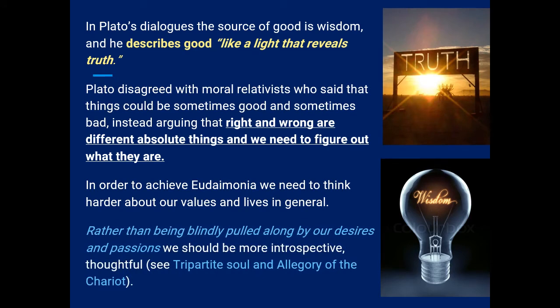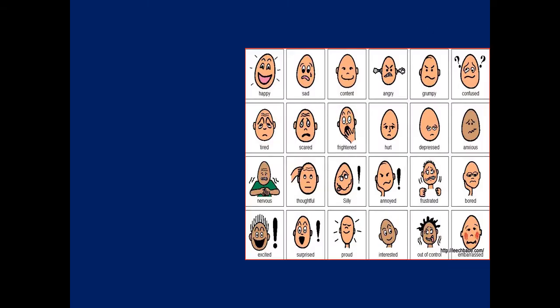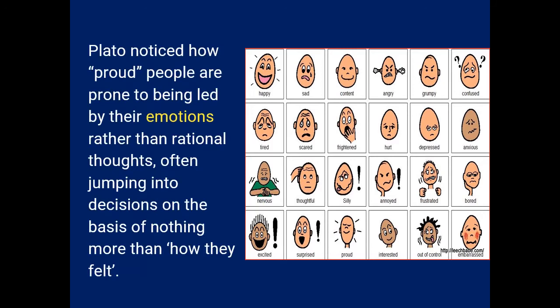Plato said most people are pulled along by their desires and passions — they don't think reflectively. Rather than actually reflect when something happens, they react from an emotional, passionate place. Here's a whole bunch of emotions. Plato said that a lot of proud people — a little conceited, a little egotistical — are often prone to being led by their emotions rather than being rational, rather than thinking.